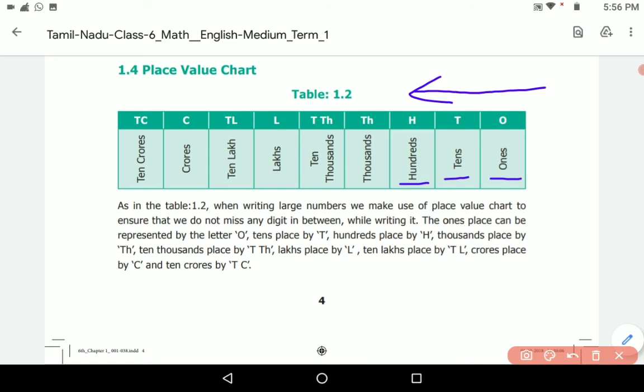Hundreds, thousands, ten thousands, lakhs, ten lakhs, crores, ten crores. This is how we should represent a number in place value chart. Let it be whatever may be the number - 1460 or something, anything else - we should always refer from here: ones, tens, hundreds, thousands, like this.